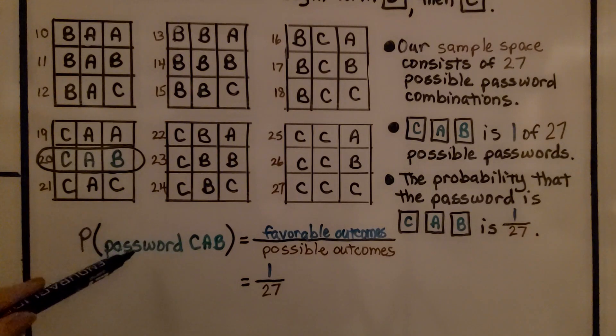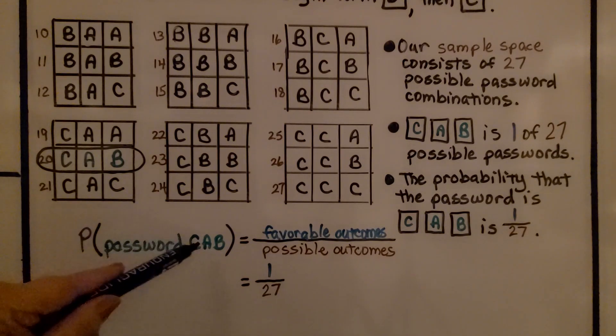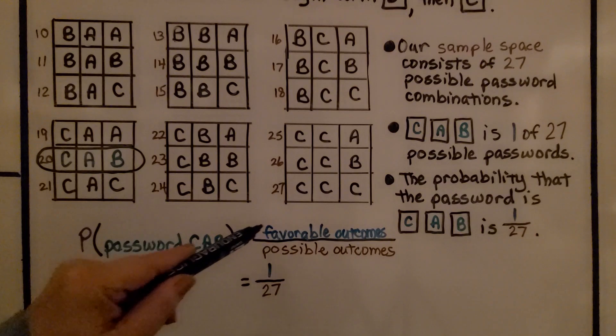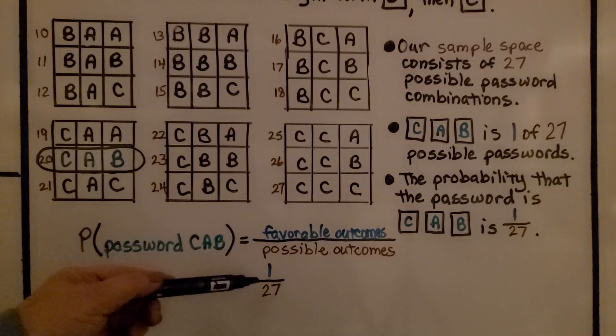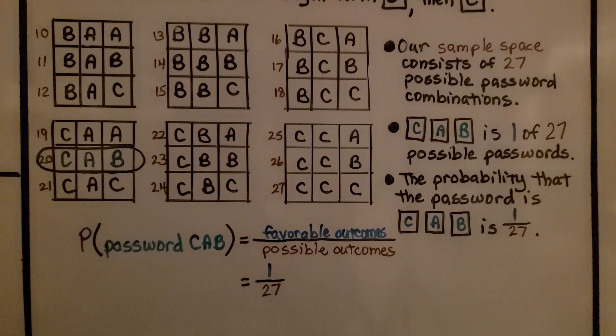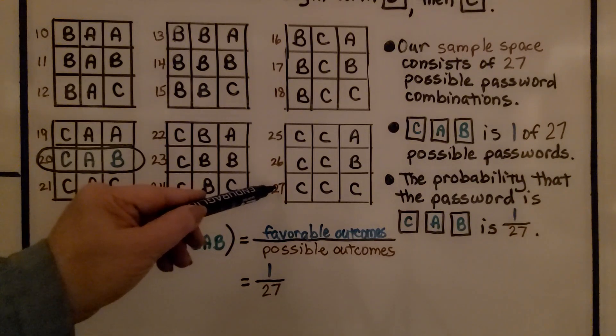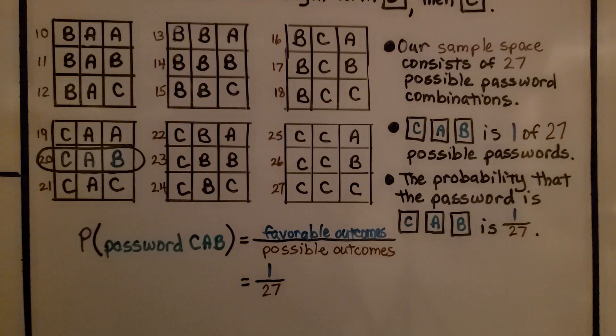The probability that the password is C, A, B, this is our event, is equal to the favorable outcomes. Well, there's only one that's C, A, B. So, that's our numerator. Out of the possible outcomes, there's twenty-seven possible outcomes, we have one twenty-seventh.